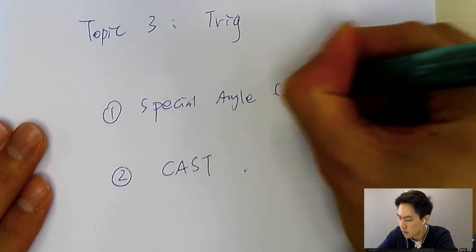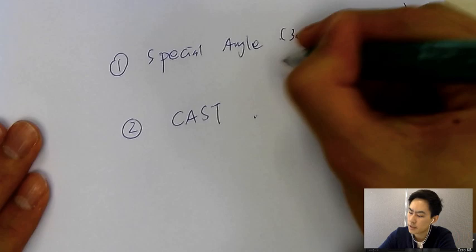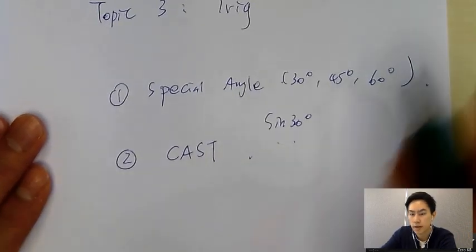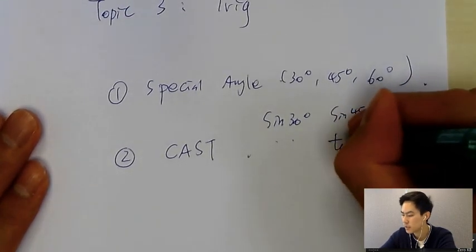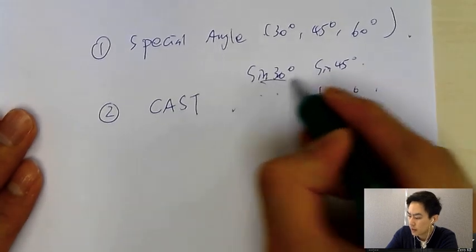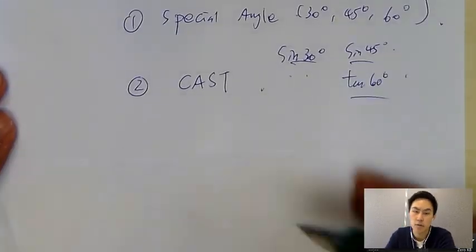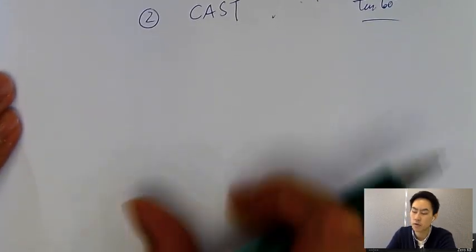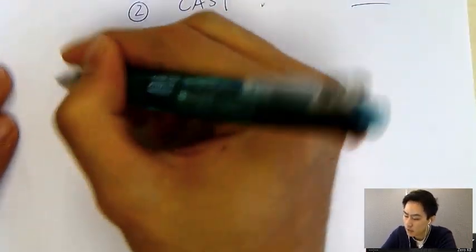Special angles are 30°, 45°, and 60°. If I ask you sine 30, sine 45, or tangent 60 without a calculator, you need to know the answers. Some schools teach you to memorize a table, which is very troublesome. Today I'll show you a skill using only two triangles to find all these angles.